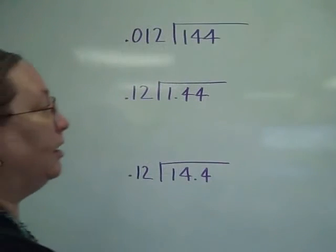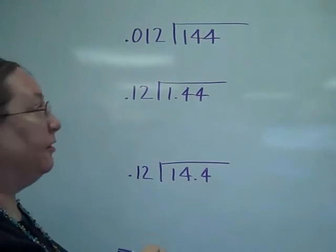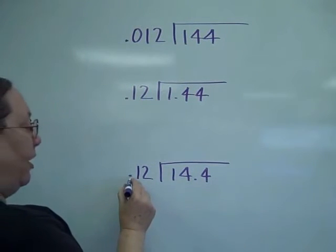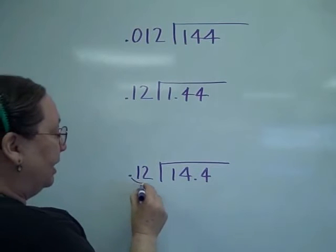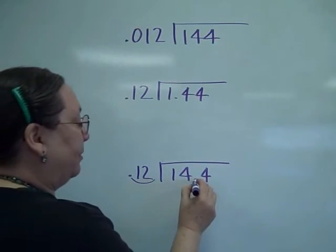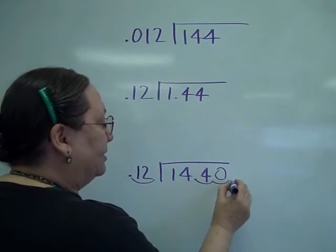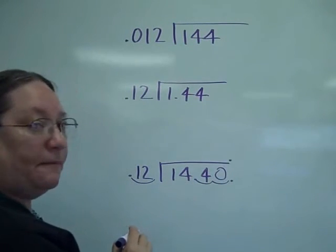Looking at another set of similar numbers, but different decimal places. Let me start here, where I've got 2 places on the outside, which means I'm going to have to move 2 places on the inside. Add a 0, and your decimal will go straight up.